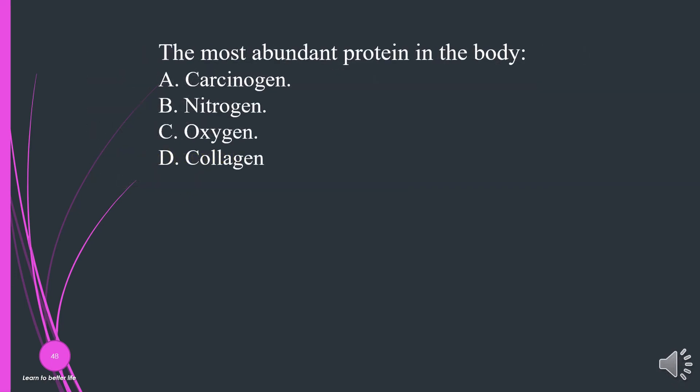The most abundant protein in the body is? A. Carcinogen. B. Nitrogen. C. Oxygen. D. Collagen. The answer is D, collagen.